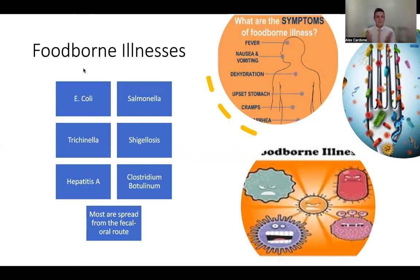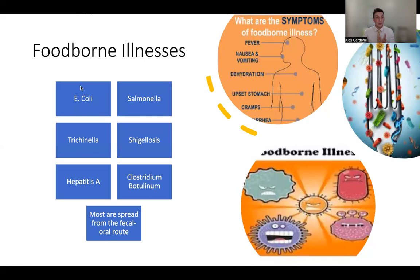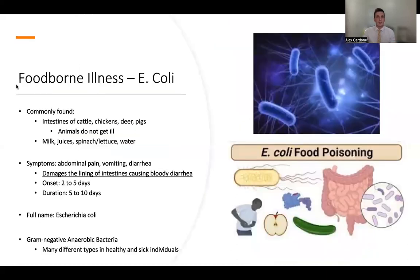Basically anything having to do with feces getting into our mouth and our digestive system really does mayhem with our system. The six specific ones we're going to cover are E. coli, salmonella, trichinella, shigellosis, hepatitis A, and Clostridium botulinum. Those pictures are just fun little graphics — nothing really too important to remember specifically. So the very first one is E. coli.